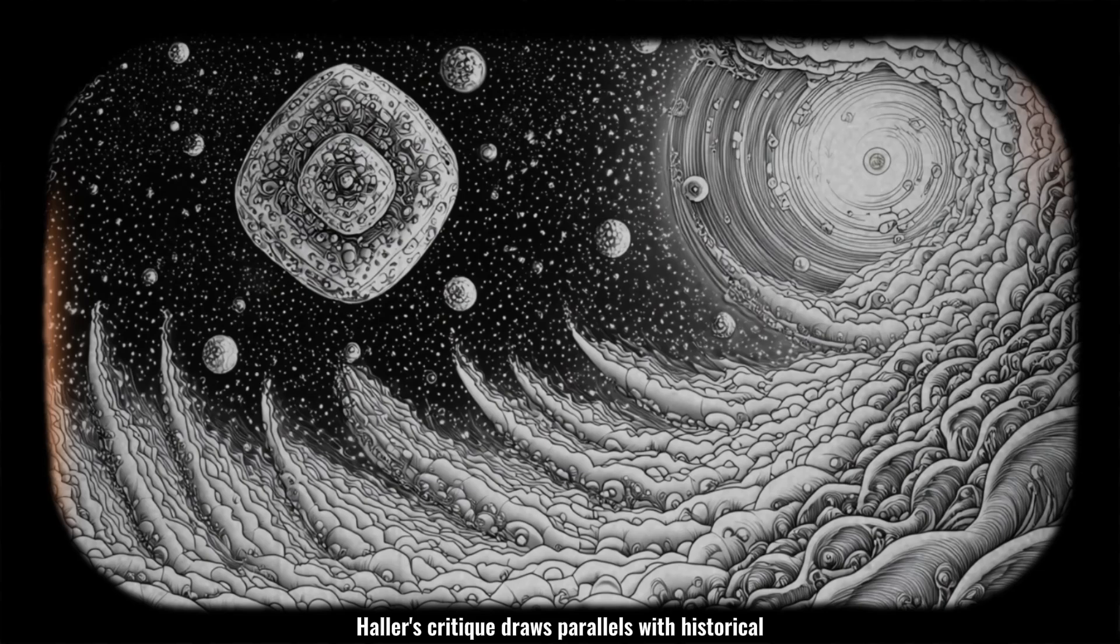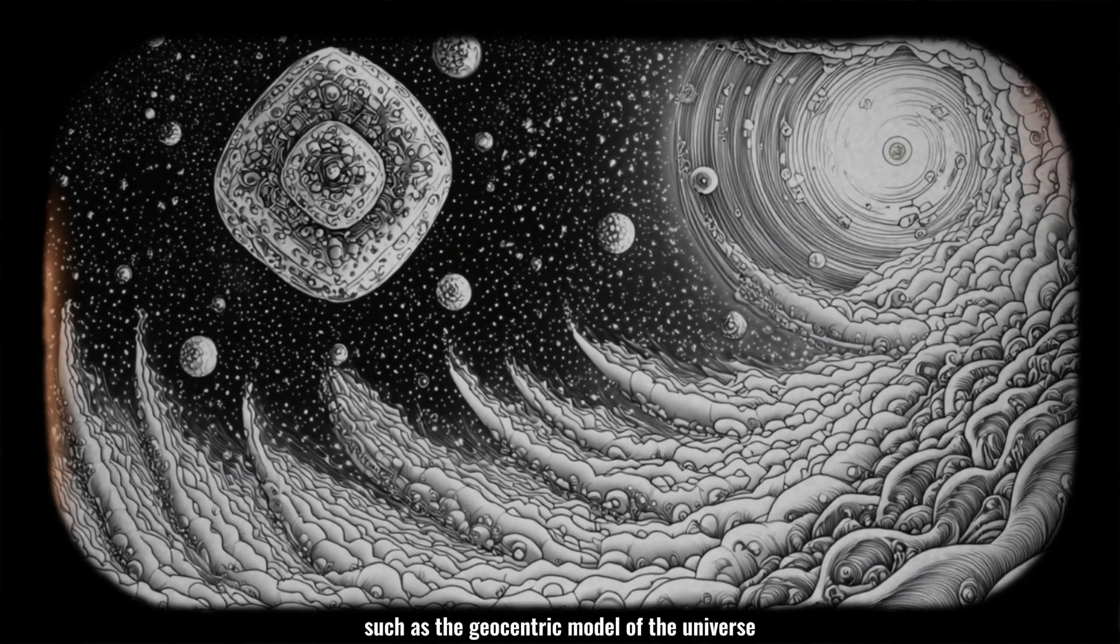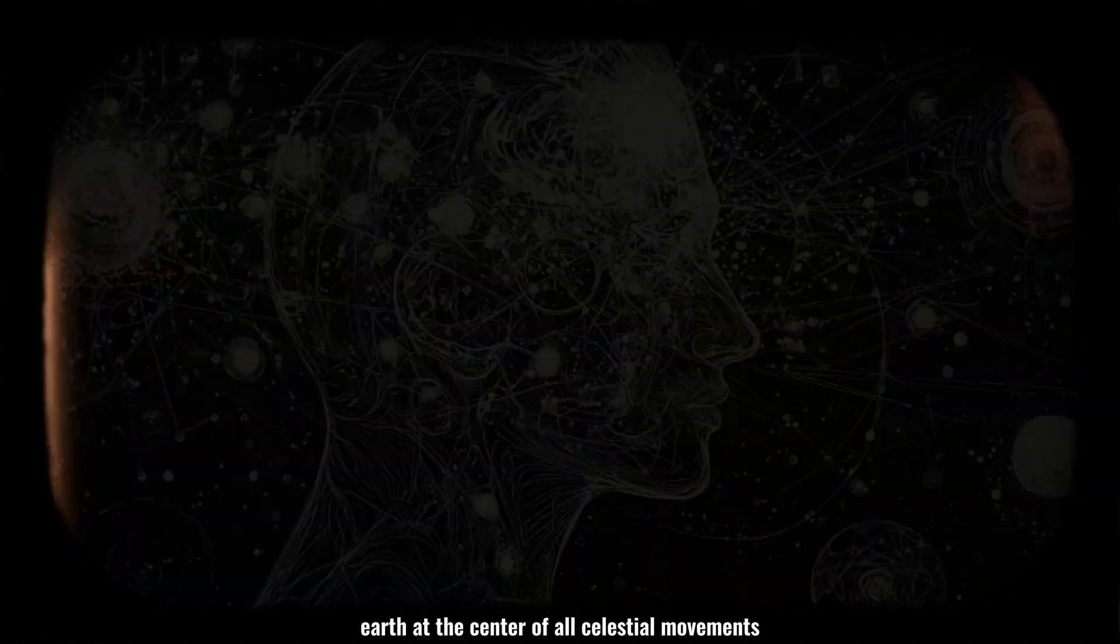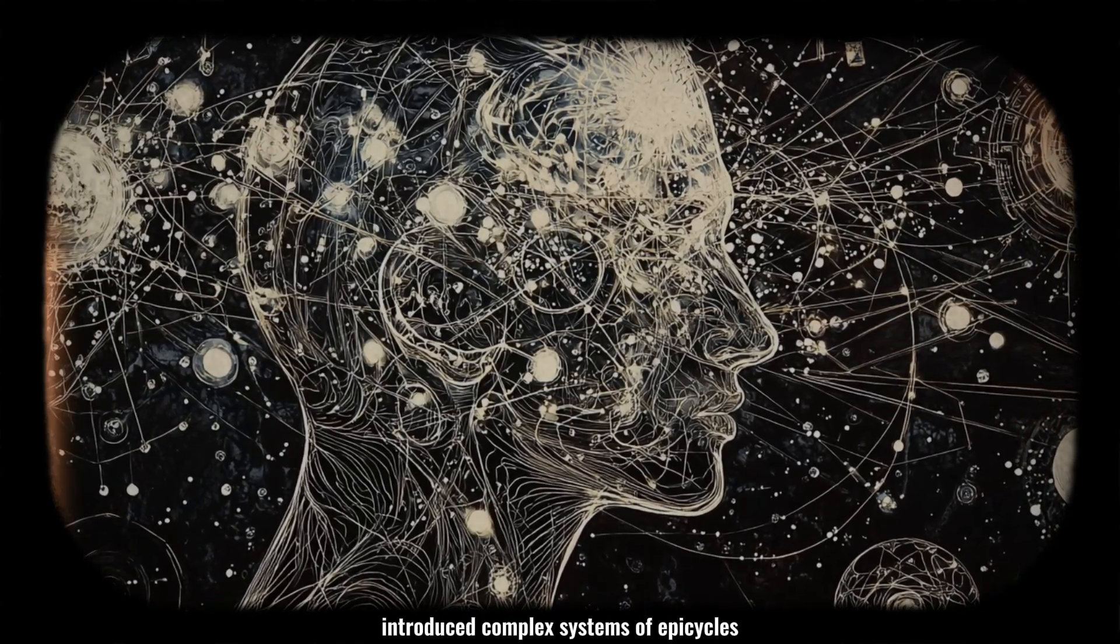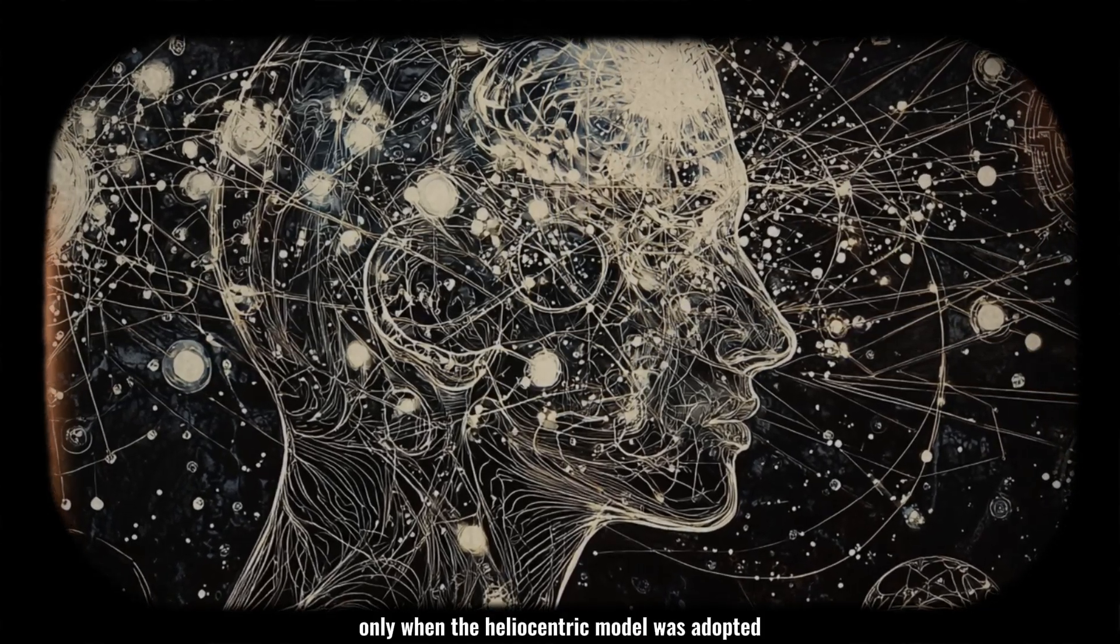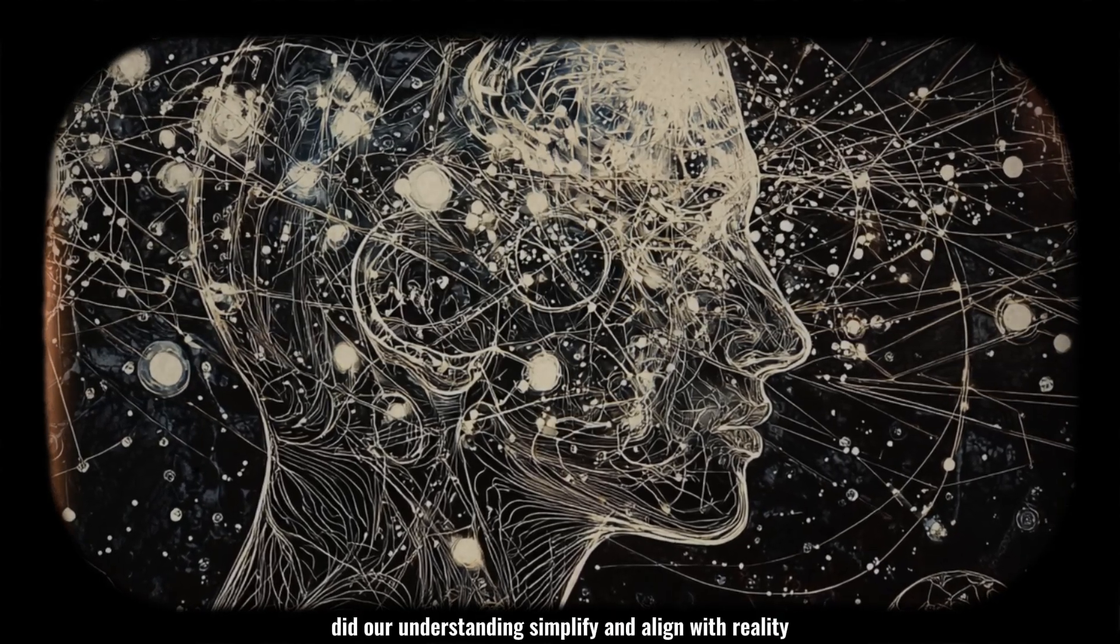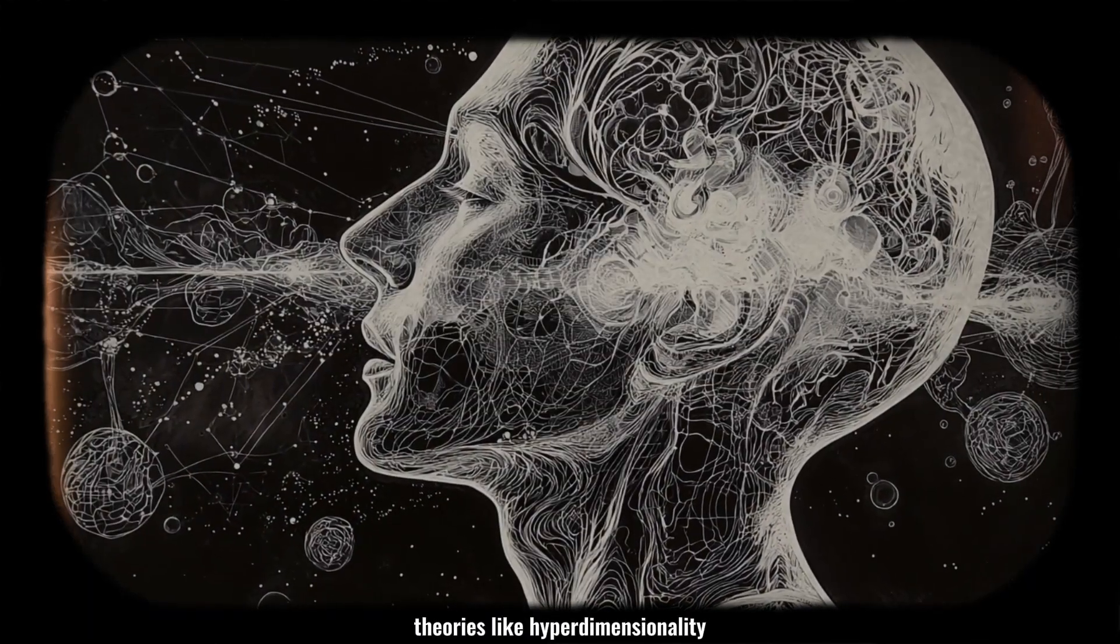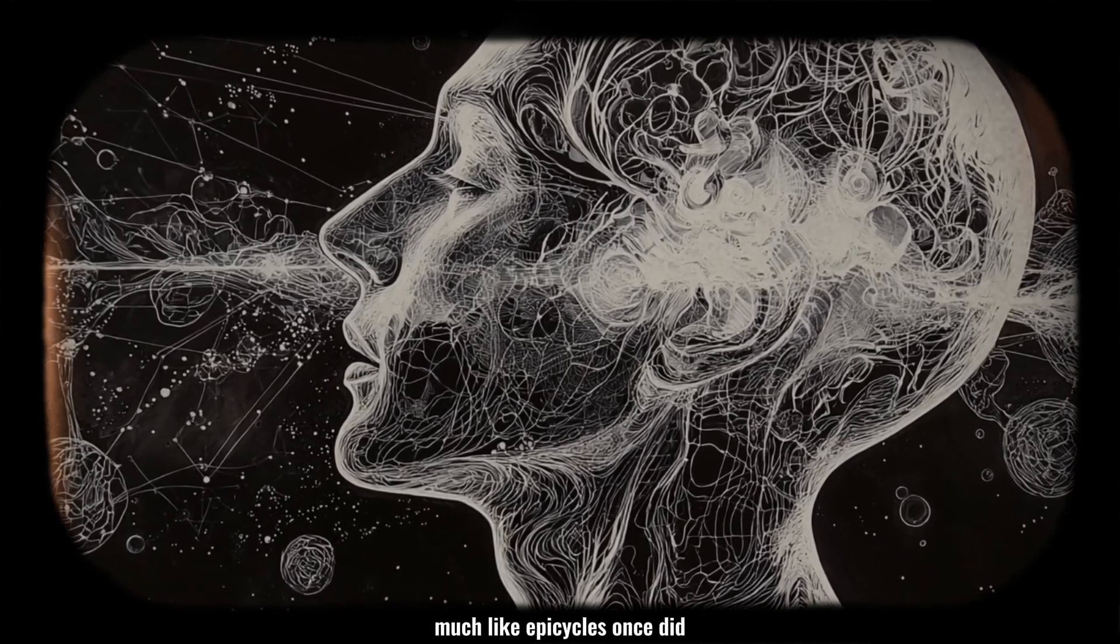Holler's critique draws parallels with historical scientific missteps such as the geocentric model of the universe which placed earth at the center of all celestial movements. To reconcile the observations of planetary motions, early astronomers introduced complex systems of epicycles. Only when the heliocentric model was adopted, positioning the sun at the center, did our understandings simplify and align with reality. Holler warns that without evidence, theories like hyperdimensionality risk complicating scientific understanding, much like epicycles once did.